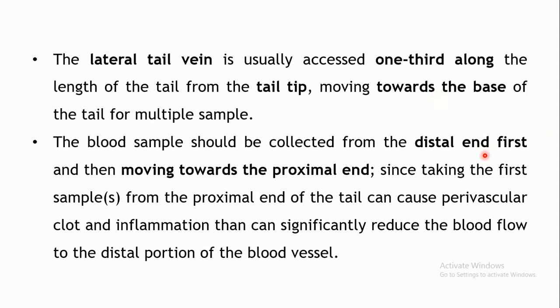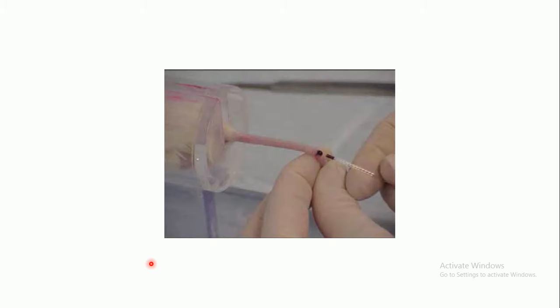The reason for starting distally is that puncturing the vein may cause clot formation or inflammation, reducing blood flow to distal regions. Therefore, start with the distal portion and then move towards the proximal end of the tail. The animal is restrained, the lateral tail vein is exposed, and the blood sample is collected starting from the tip end, moving towards the base for subsequent collections.